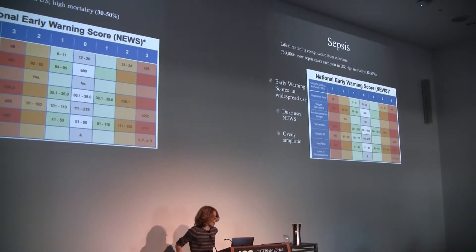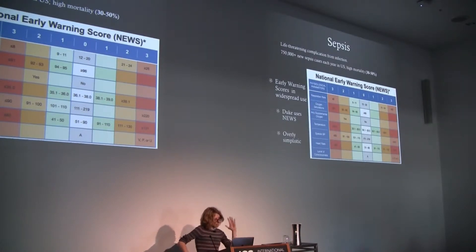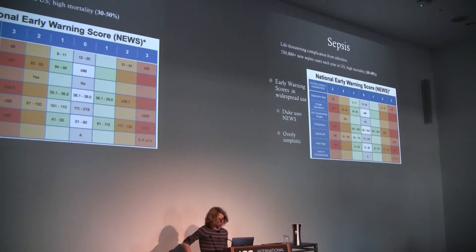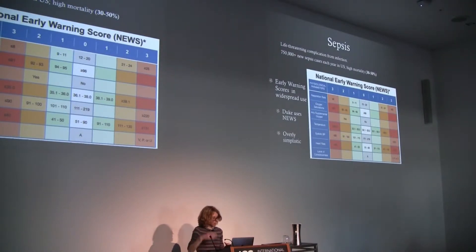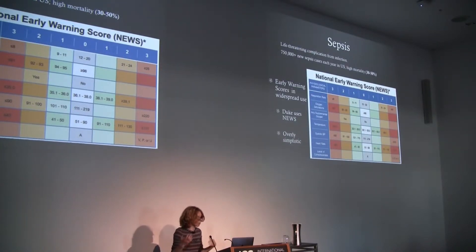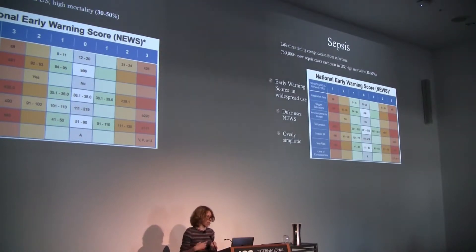What Duke uses right now is called NEWS — the National Early Warning Score System. You look at a whole bunch of physiological parameters for a patient: respiration rate, oxygen saturation, blood pressure, etc. As you deviate from normal, you add more points, sum them up, and if the patient crosses a particular threshold, they're considered at risk for decompensation or sepsis. This score system isn't really that good: for example, a systolic blood pressure of 219 gives zero points, but 220 gives three points. It's not clear where these thresholds came from, and you can probably do significantly better.